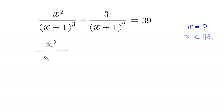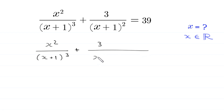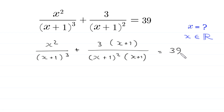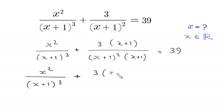We have x squared divided by (x+1) whole cubed. To make the second term's denominator the same as (x+1) whole cubed, we multiply and divide that expression by (x+1). So 3 divided by (x+1) whole squared, multiplied by (x+1) over (x+1), gives us x squared divided by (x+1) whole cubed plus 3 times (x+1) divided by (x+1) whole cubed, equal to 39.